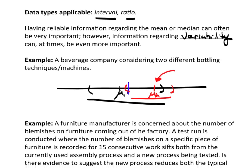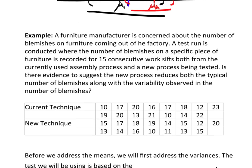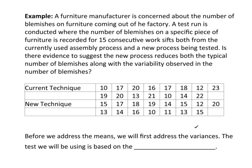Let's take a look at another example. Suppose a furniture manufacturer is concerned about the number of blemishes on furniture coming out of the factory. A test run is conducted where the number of blemishes on a specific piece of furniture is recorded for 15 consecutive work shifts, both from the currently used assembly process and a new process being tested.